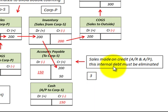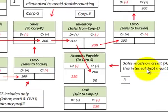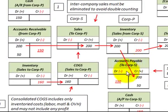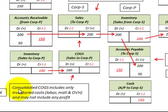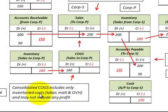Thirdly, sales made on credit — the accounts receivable and accounts payable for the subsidiary and the parent — this is an internal debt and it must be eliminated. So the accounts payable for the parent corporation and the accounts receivable for the subsidiary on this sale have to be eliminated. And then one last point: the consolidated cost of goods sold for the subsidiary includes only inventoried costs like labor, material, and overhead, and may not include any profit.